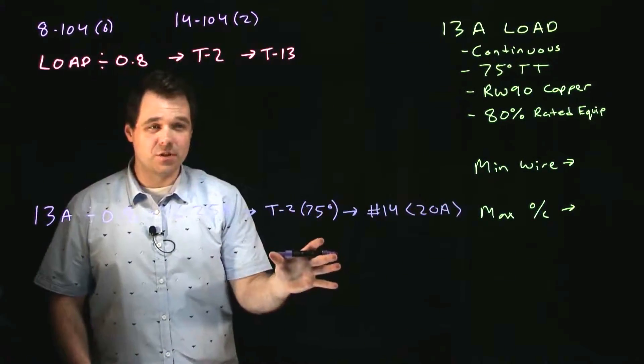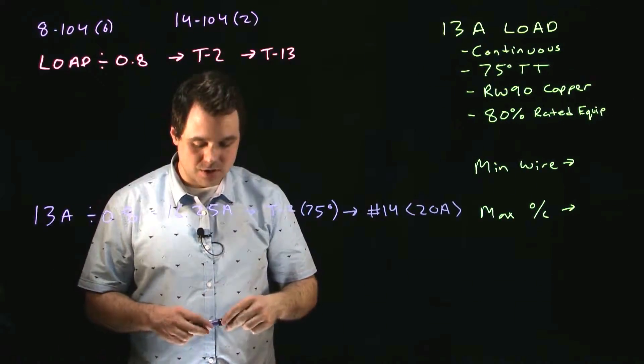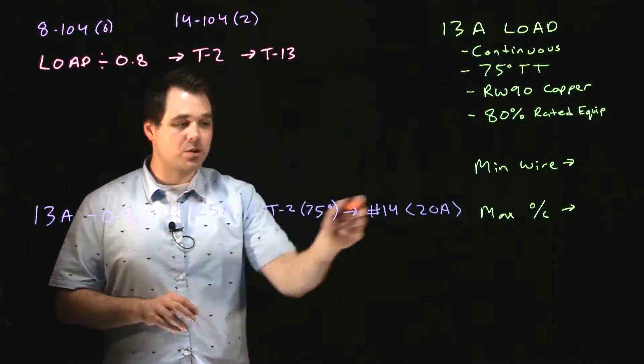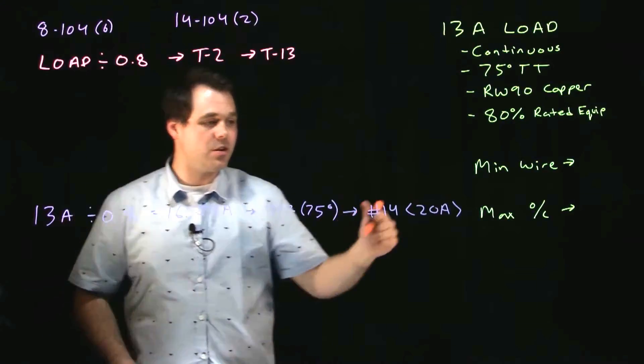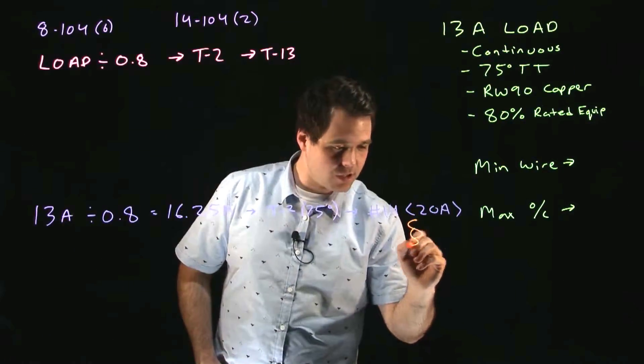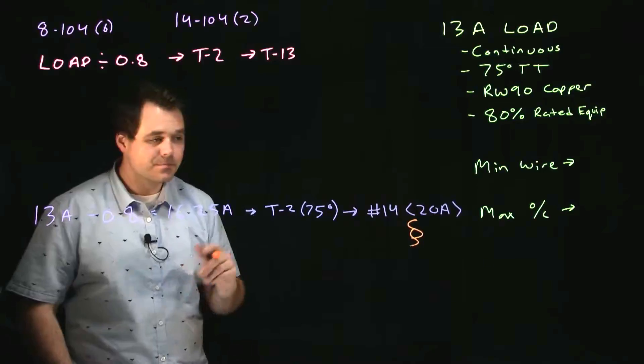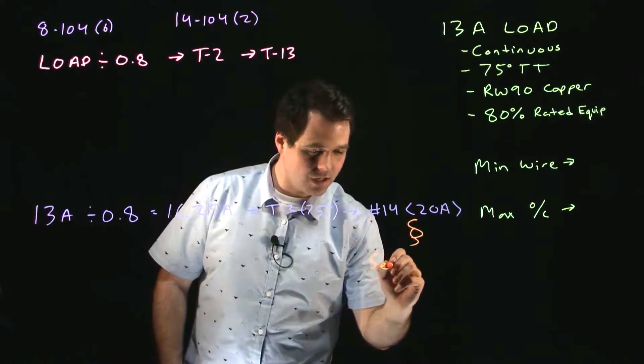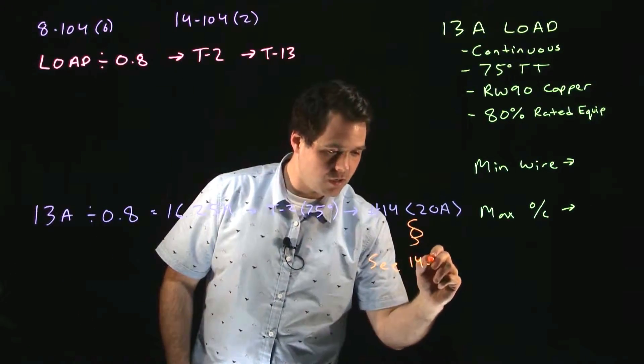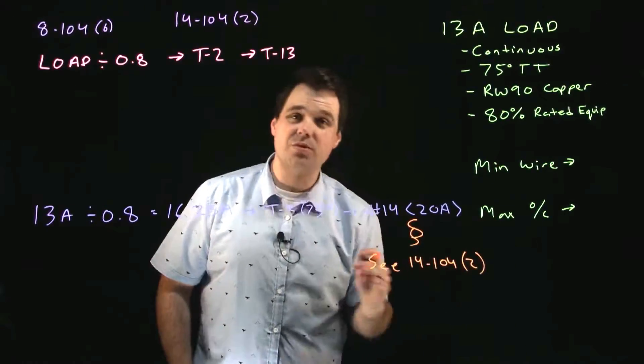Now just because it's good for 20 amps doesn't always mean we get to put a 20 amp overcurrent on it. Right next to 14 number 14 on table 2 there's the little symbol that looks like this, a double S, a squiggle, and it says to see 14-104 sub rule 2.